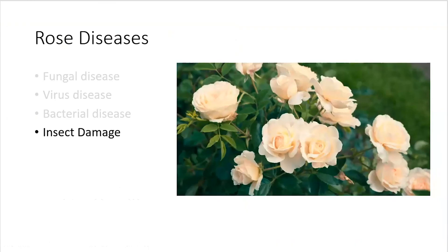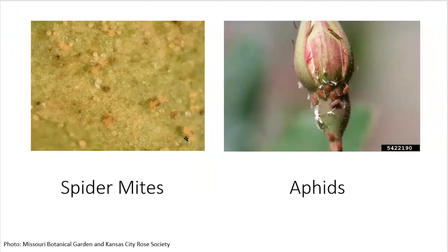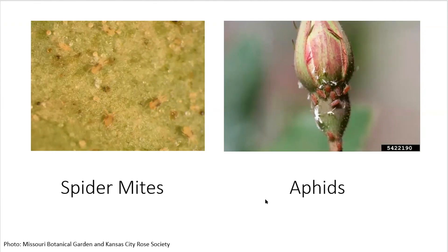The last category is insect damage for rose. There are several different insects that can cause injury, including Japanese beetles, scales, and spider mites — we actually have lots of reports of increased spider mite activity lately. Also, aphids and thrips are very common vectors for some specific virus diseases. If you have any questions about insect damage or any fungal, bacterial, or viral disease for roses, let us know. The MU Plant Diagnostic Clinic is available and open all week except weekends to help you. Feel free to send photos to us. Thank you.